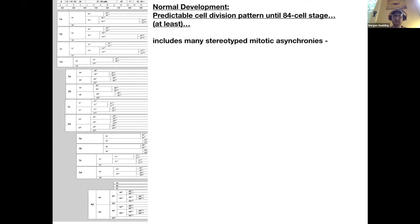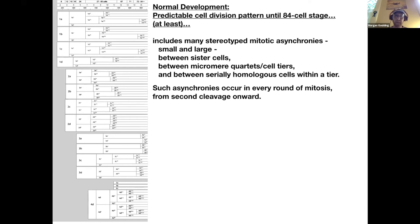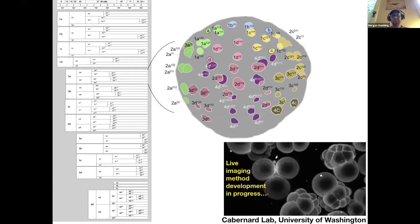I was a maniac in graduate school. Ask John Wallingford, he'll tell you. I did the entire cell lineage for the Ileonasa embryo up until the 84 cell stage and it's all very predictable. I found many stereotyped mitotic asynchronies, small ones, large ones, between sister cells, between micromere quartets and other tiers, and between serially homologous cells in different quadrants. So this is this widespread thing that must be important, and I'm curious about how the cell cycles are controlled.